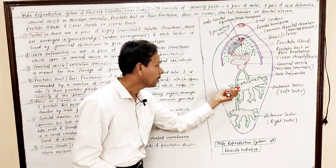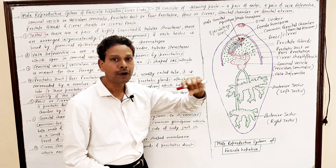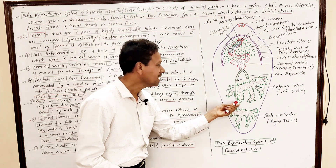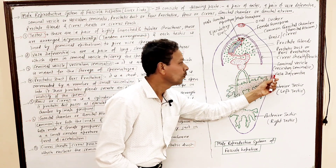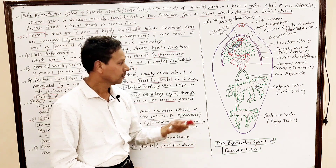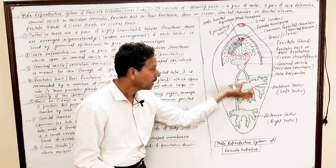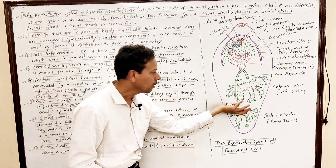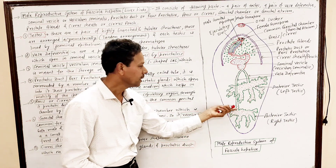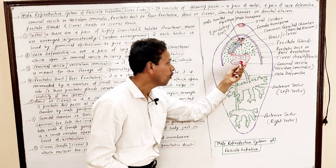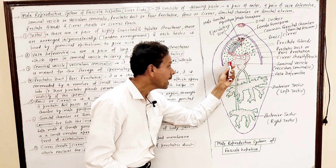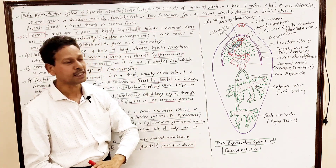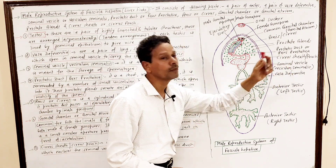From these testes, a pair of fine ducts, whitish in color, arise. These ducts are named vasa deferentia. The vasa deferentia carry the male gametes — spermatozoa — by peristaltic action, and they open into this sac-like structure, the seminal vesicle.